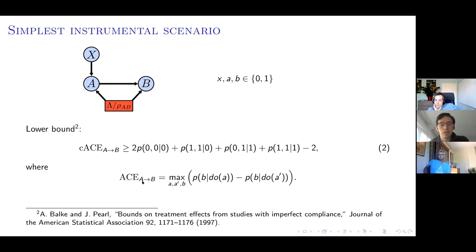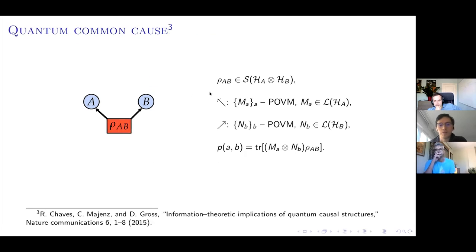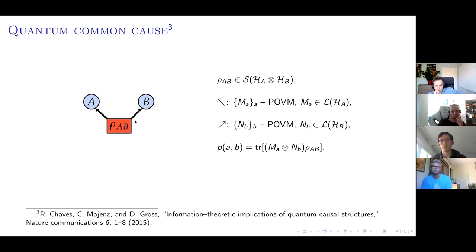This bound can sometimes be tight, reaching one, meaning all dependence between A and B came from the direct causal link. The 'C' in ACE_C stands for classical — not quantum — because I will now be talking about quantum common causes, and first we need to say what we mean by a quantum causal model.